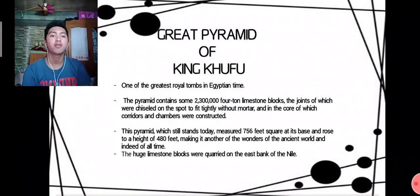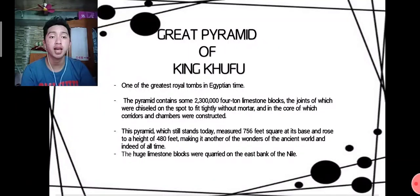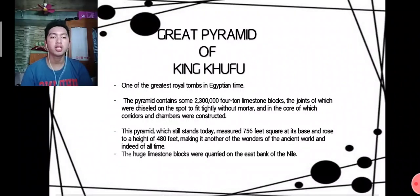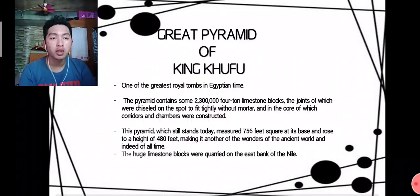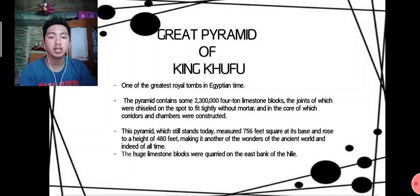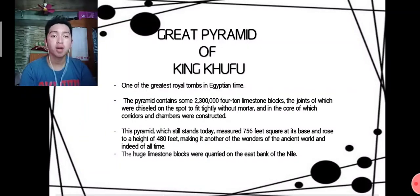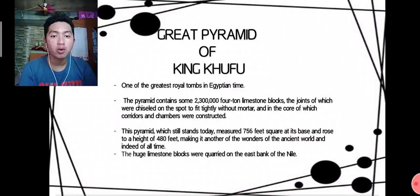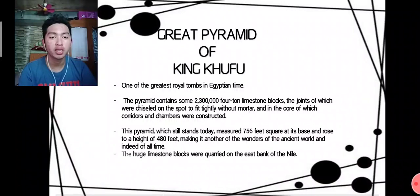The Great Pyramid of King Khufu is one of the greatest royal tombs of Egyptian times. The pyramid contains some 2,300,000 limestone blocks, the joints of which were chiseled on the spot to fit tightly without mortar, with corridors and chambers constructed in the core. This pyramid, which still stands today, measured 756 feet square at the base and rose to a height of 480 feet, making it one of the Wonders of the Ancient World.